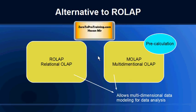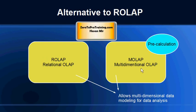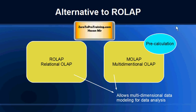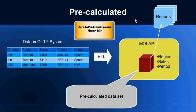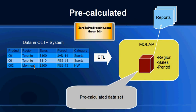Two main types of online analytical processing systems available are relational systems and multi-dimensional systems. Both relational and multi-dimensional OLAP allow multi-dimensional data modeling for data analysis. The main difference is not whether one allows multi-dimensional modeling and the other does not — the main difference comes in pre-calculation.